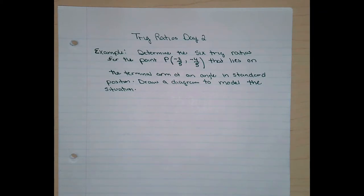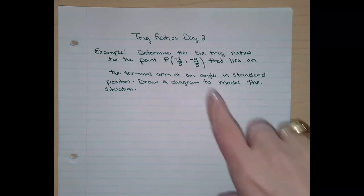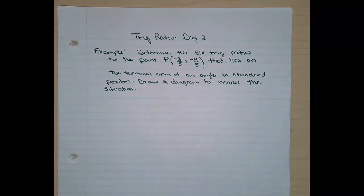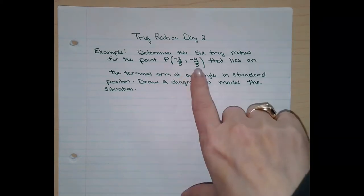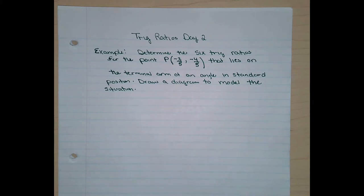Draw a diagram to model the situation. Note that these are not trig ratios you're expected to have memorized, but the point does lie on the unit circle — the values are less than one. I'm not asking you to find the angle, because you couldn't do that without a calculator. I'm asking you to find the trig ratios of that point on the unit circle.